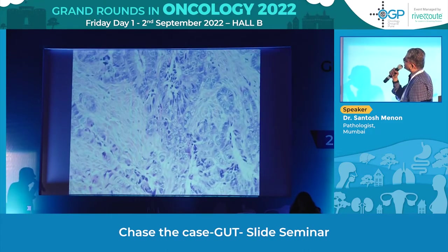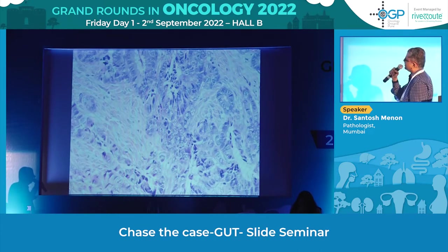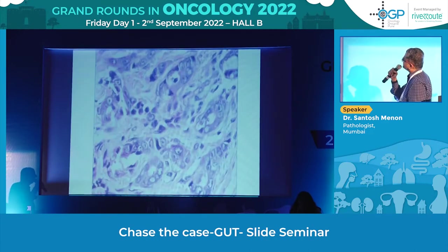At higher power the tumour cells looked highly malignant — some anaplastic smudgy nuclei within the glands, a lot of material within the glands. You can see how bizarre they were looking, with vesicular nuclei and very prominent nucleoli.